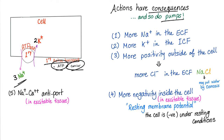Quick review: why is more sodium outside? Sodium-potassium pump. Why more potassium inside? Same reason. Chloride follows sodium. Phosphate inside because we need it for ATP. Glucose is outside because once it enters the cell it's converted to glucose-6-phosphate — so there is no free glucose inside the cell. Bicarbonate is more common outside the cell — we call this the alkaline reserve, which we'll discuss soon.